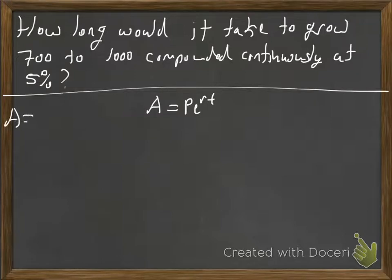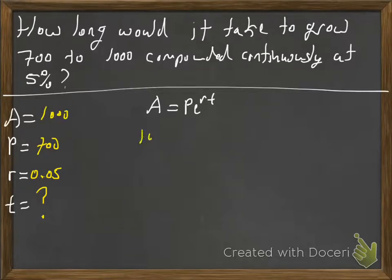So we're going to write down A, P, r, and t, and I will give you a moment if you want to try to do this on your own. Okay, so the time we should know that because they're asking us to find it, so we don't know what the time is. The rate is 0.05, what we start with is 700, and what we want to get to is 1000. Go ahead and plug that stuff in. And just like the other one, we're going to divide by the principle, so we're going to divide both sides by 700.